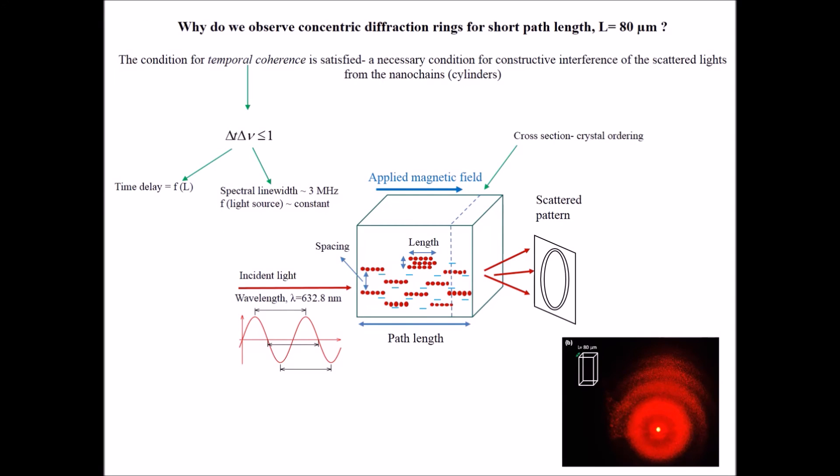For the short path length of 80 micrometer, the condition for temporal coherence among the scattered lights from chains and columns is satisfied. Therefore, the scattered lights are able to undergo constructive interference resulting in the formation of concentric diffraction rings.